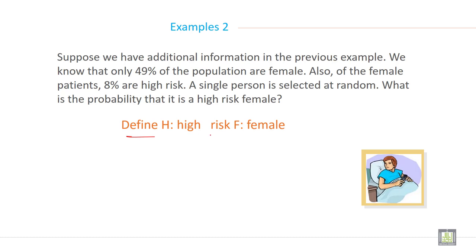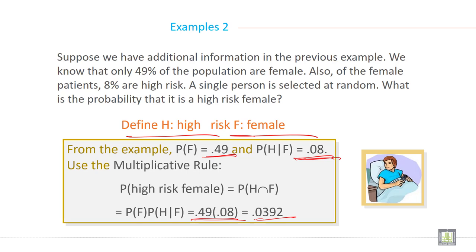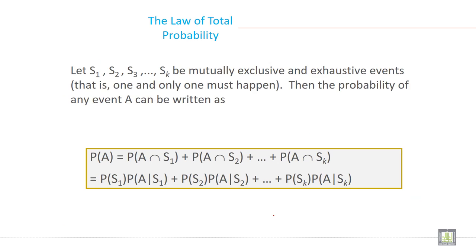Define H high risk and F female. From the example, probability of female is 0.49 and probability of high risk given female is 0.08. Use the multiplicative rule. Probability of high risk female equals probability of H intersection F, and you can calculate this as 0.0392.